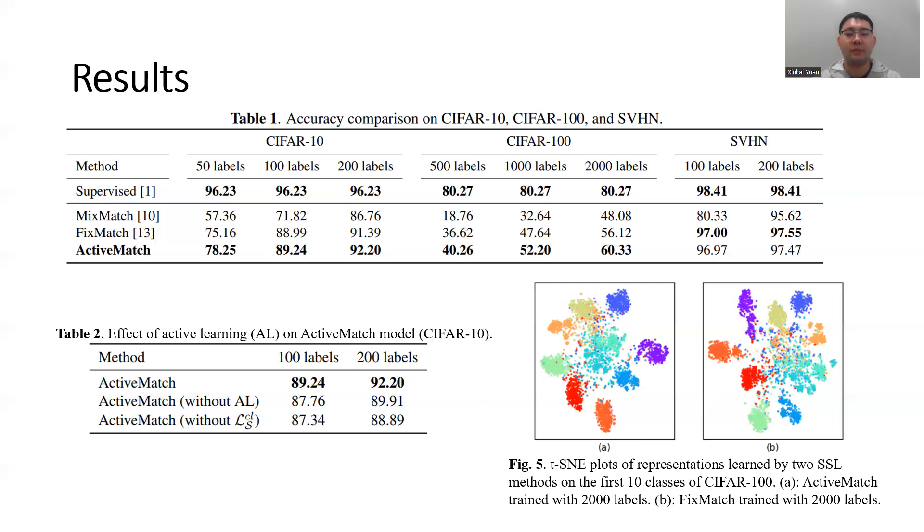The figure on the right bottom gives a visualization of the representations learned by our model and the previous FixMatch model after training with 2,000 labels. They both visualize the representation clusters of the first 10 classes of CIFAR-100. The figure shows that the representations learned by our model visually have better clusters compared with FixMatch.